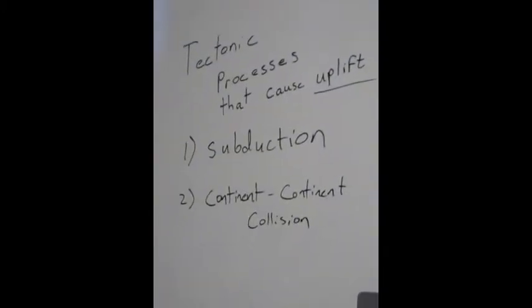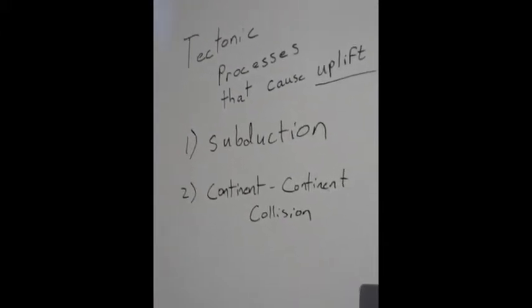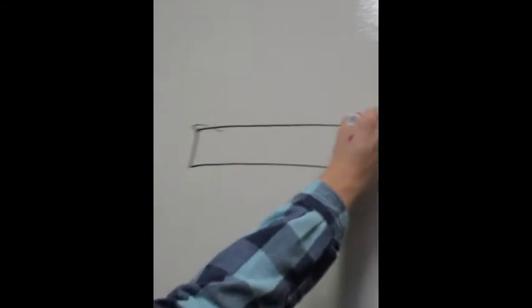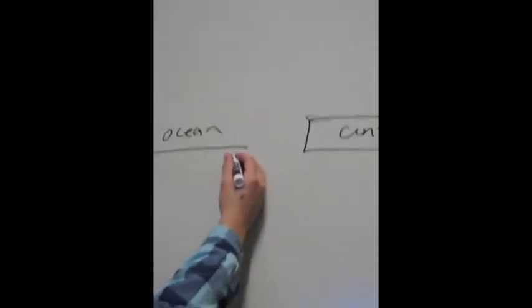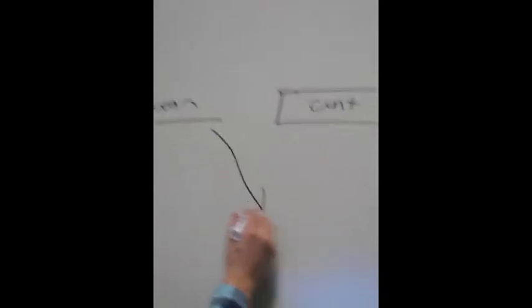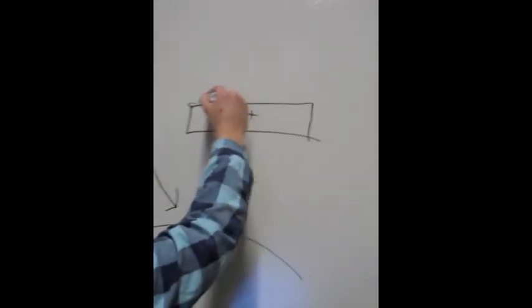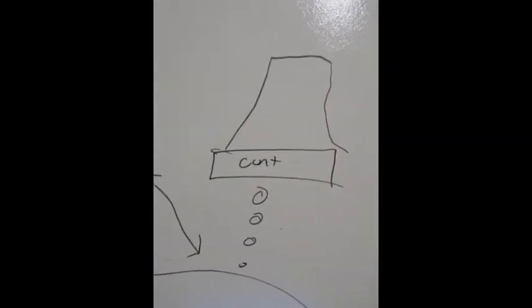There are two main tectonic processes that cause uplift. The first one is subduction. Subduction occurs when a dense oceanic plate subducts under a less dense continental plate. When the oceanic plate subducts, it melts due to heating of the mantle, and this causes increased volcanism, which causes a rise and uplift of mountains like you see in the Andes in South America.